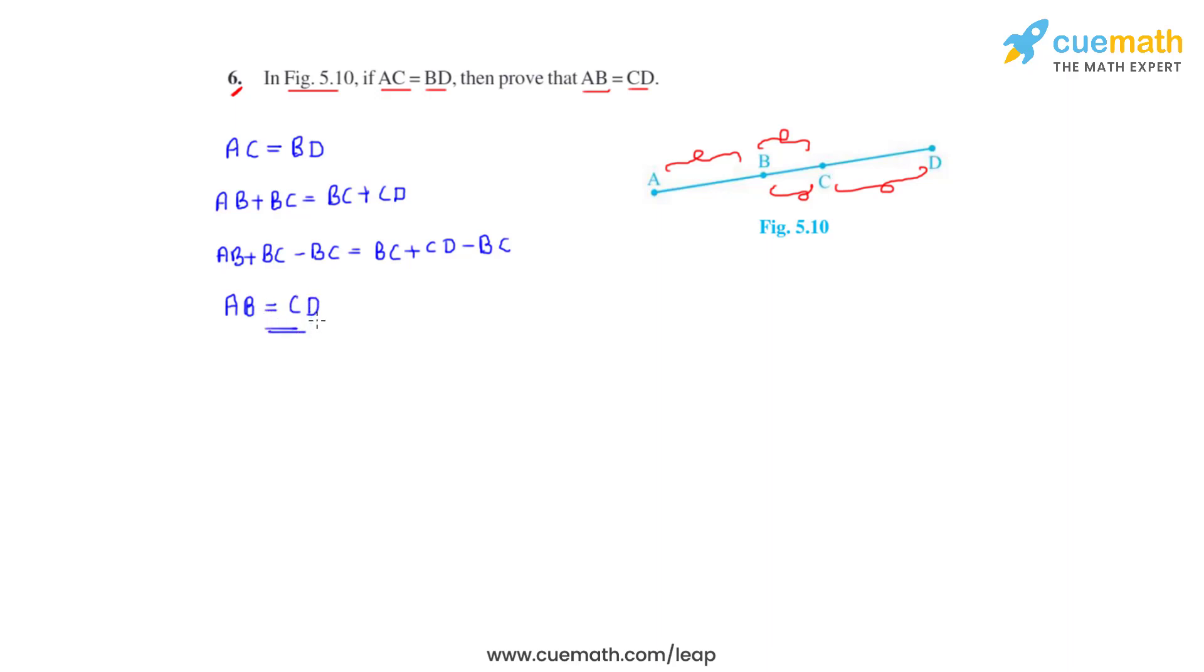Now this could have also been derived from the information that we know that when equals are subtracted from equals, then the remainders are also equal. So this is how we solve this problem.